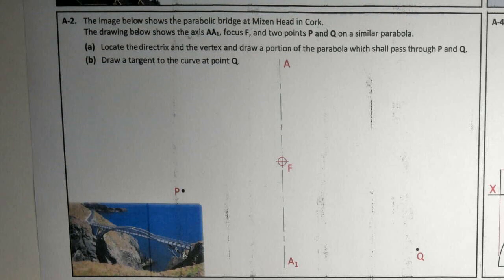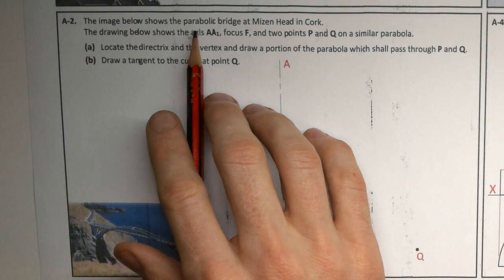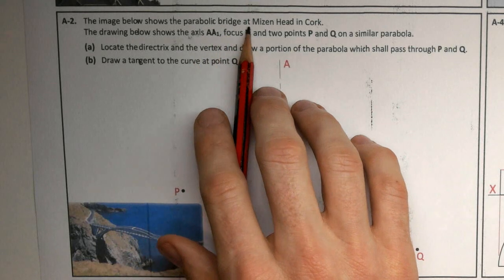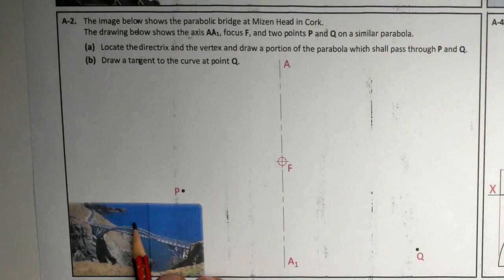Welcome to 2022 question A2. It's a conics question. The image below shows a parabolic bridge at Mizen Head in Cork. So here's our parabola.